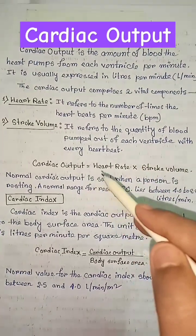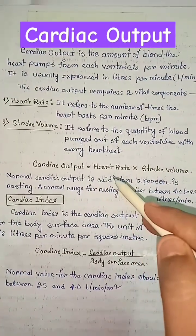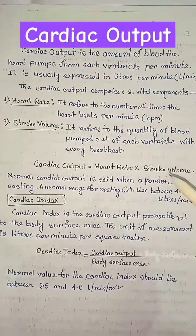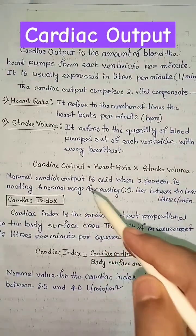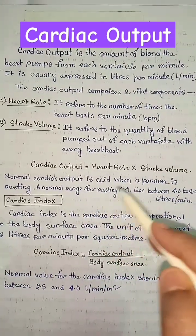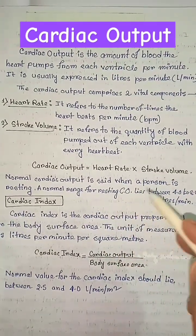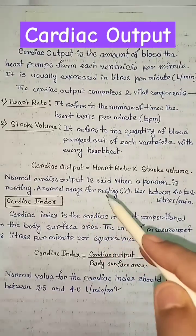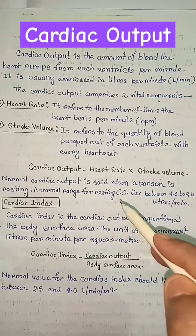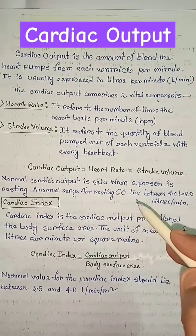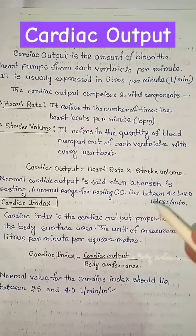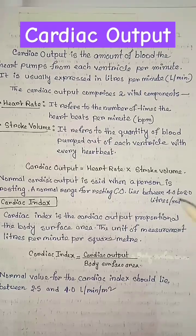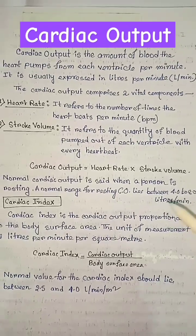Cardiac output equals heart rate multiplied by stroke volume. Normal cardiac output is measured when a person is resting, with a normal range of 4 to 8 liters per minute.